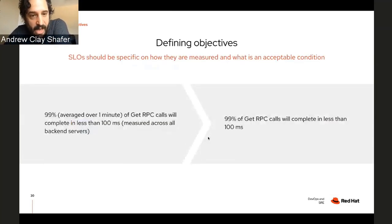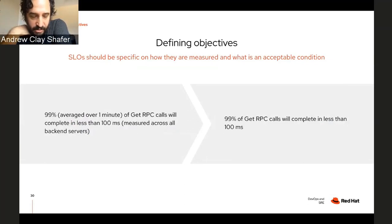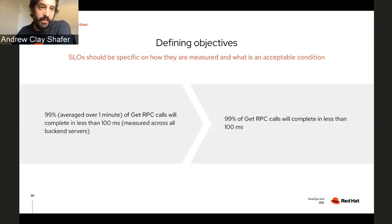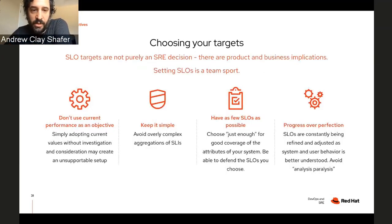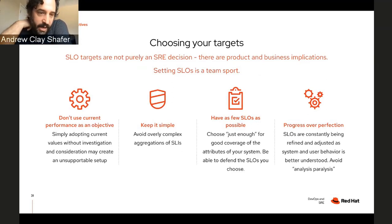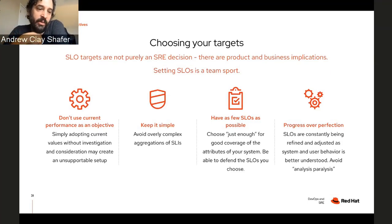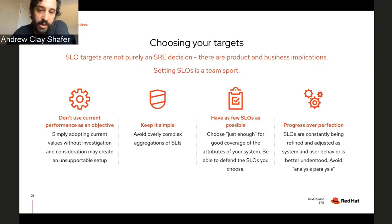Now that you have SLIs and can measure things, you move on to the SLO — the Service Level Objective. To me this is the defining quality of SRE. You say we want this level of reliability for these indicators, and that establishes an error budget. You don't necessarily want a single dimension for an SLO, but you also don't want to make it too complicated. Progress is more important than perfection — what are we measuring today and how can we improve it?